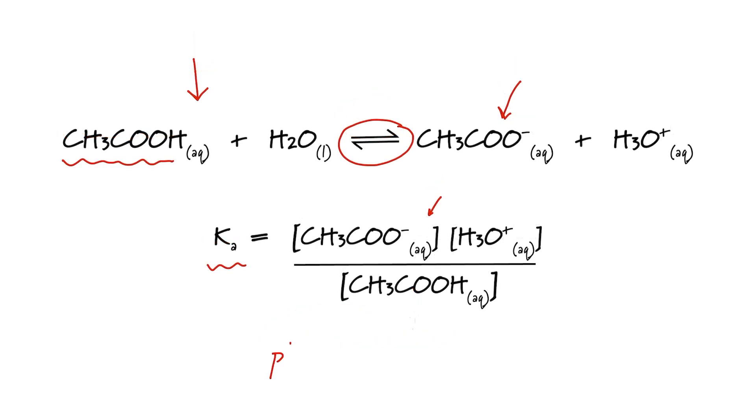The negative log of the Ka is known as the pKa and this is the value that we use to compare the strength of acids. The lower the pKa the stronger the acid.